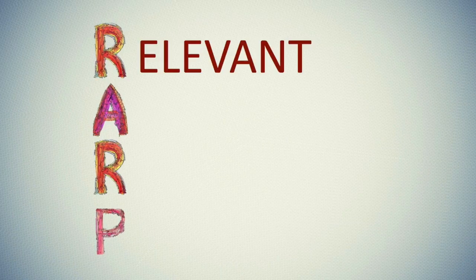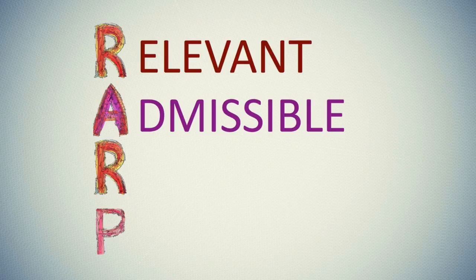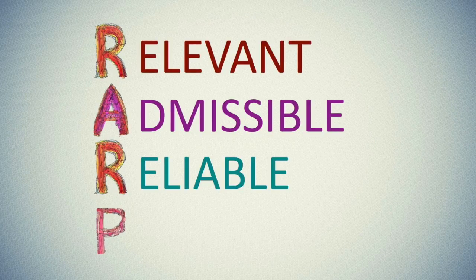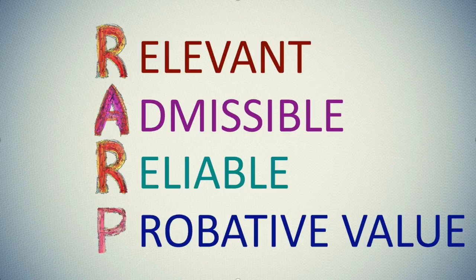So those are our types of evidence: oral evidence, documentary evidence, and real evidence. Now let's think about the rules the court will apply when someone tries to put evidence forward in a case. These rules can be really complicated, which is why evidence is usually an advanced subject. At their simplest, though, they can be reduced to one acronym: R-A-R-P. Is the evidence relevant? Is the evidence admissible? Is the evidence reliable? And what is the probative value of the evidence?